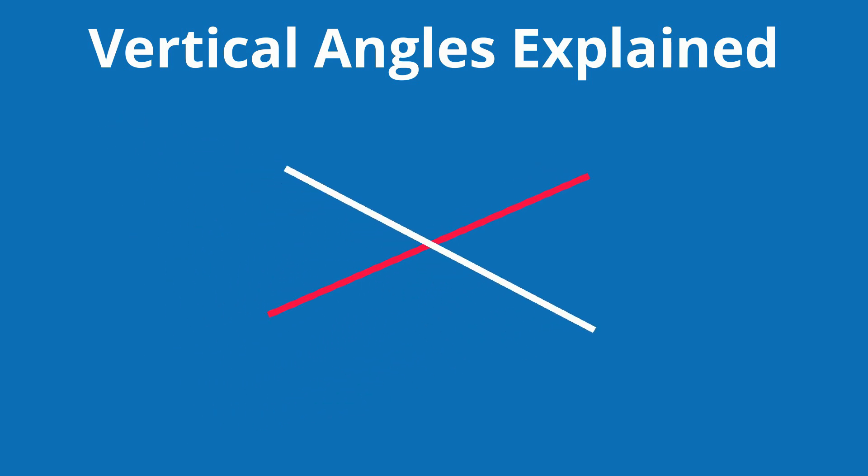When two lines cross they create angles and share a common vertex. Vertical angles are the angles opposite each other when these two lines cross that share the same vertex.